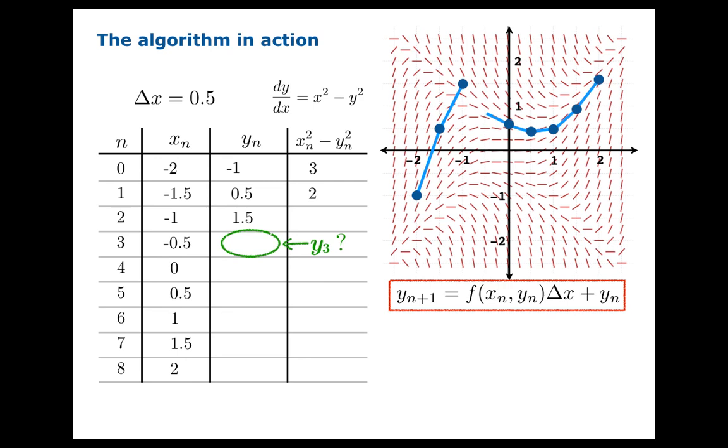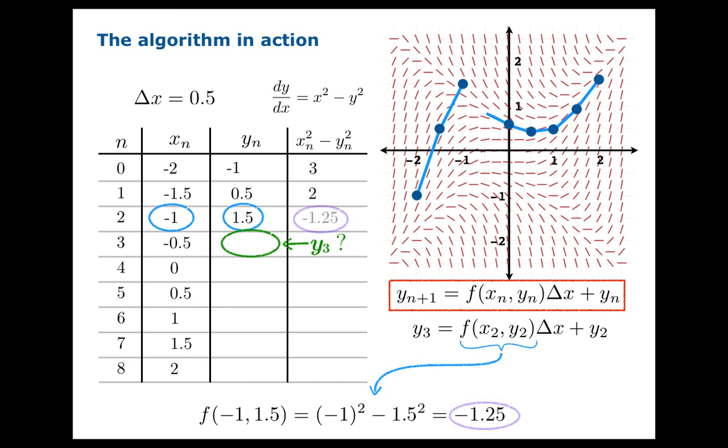Let's go through this one more time. What's y3? We have to find the slope first. The slope, in this case, when we plug in negative 1 for x and 1.5 for y is negative 1.25. And when we use that slope for the formula to give us y3, we get 0.875 is our new y-coordinate.